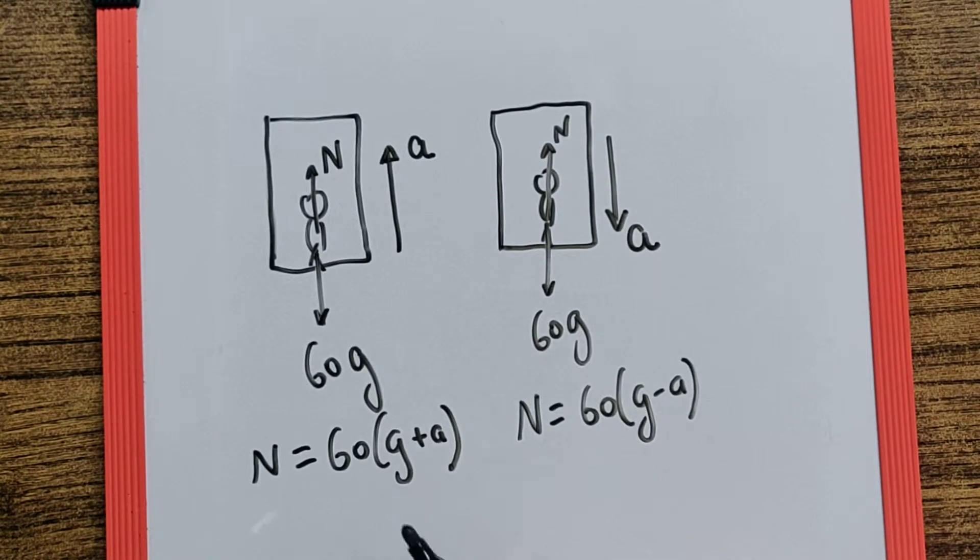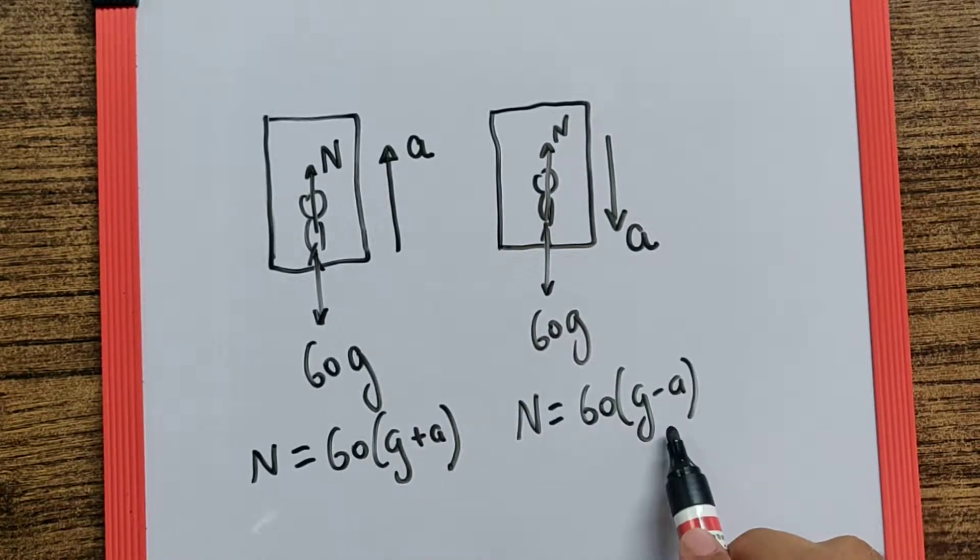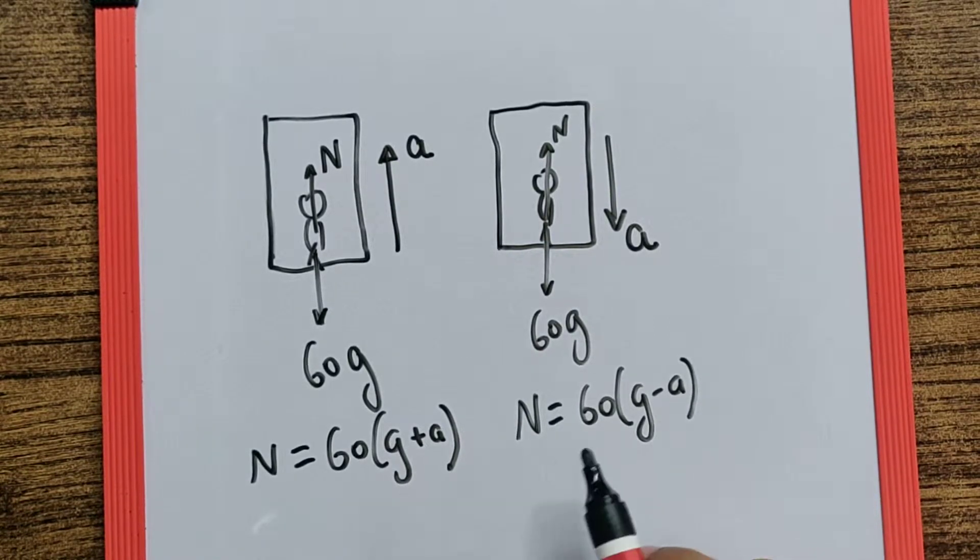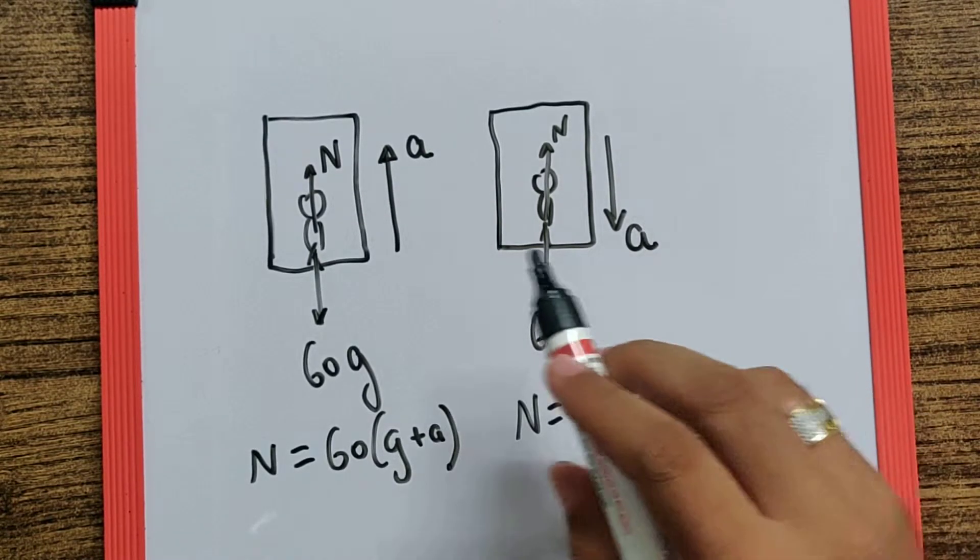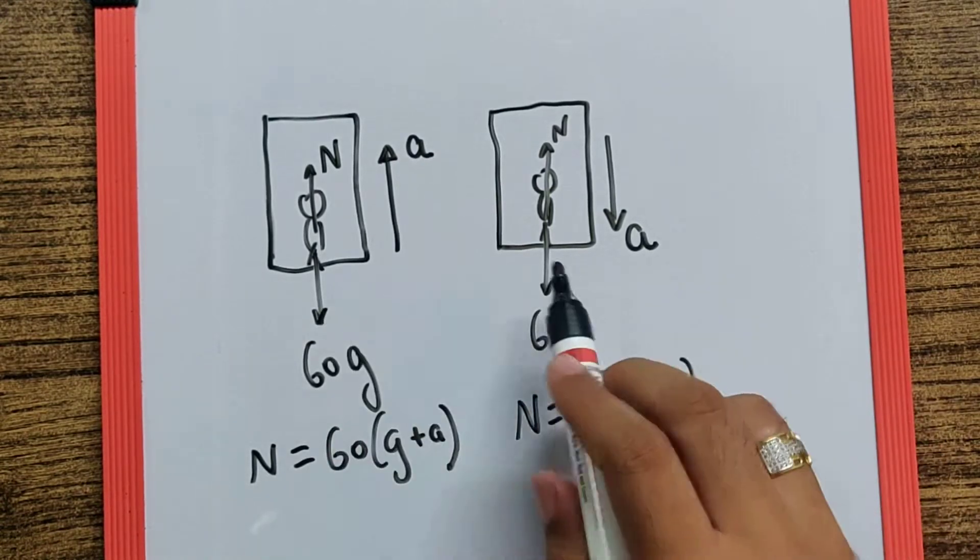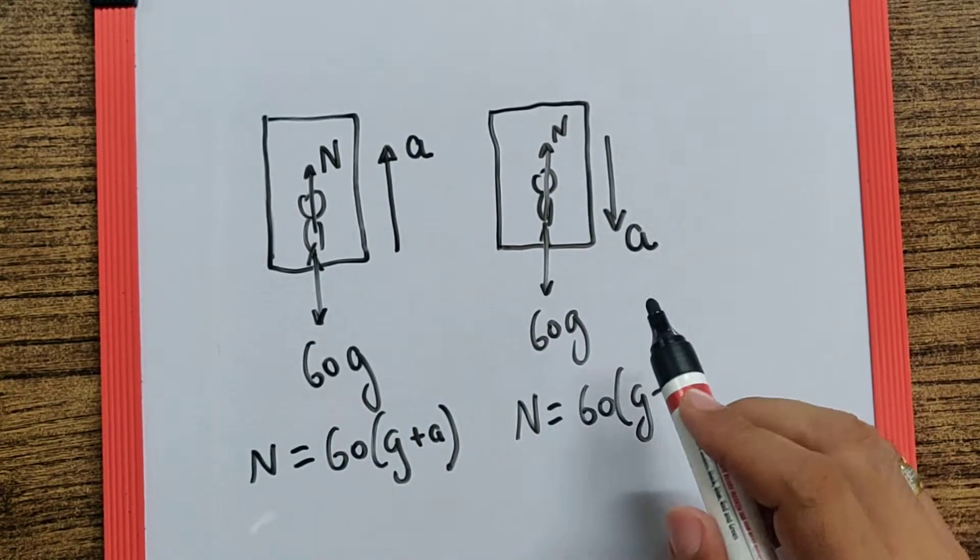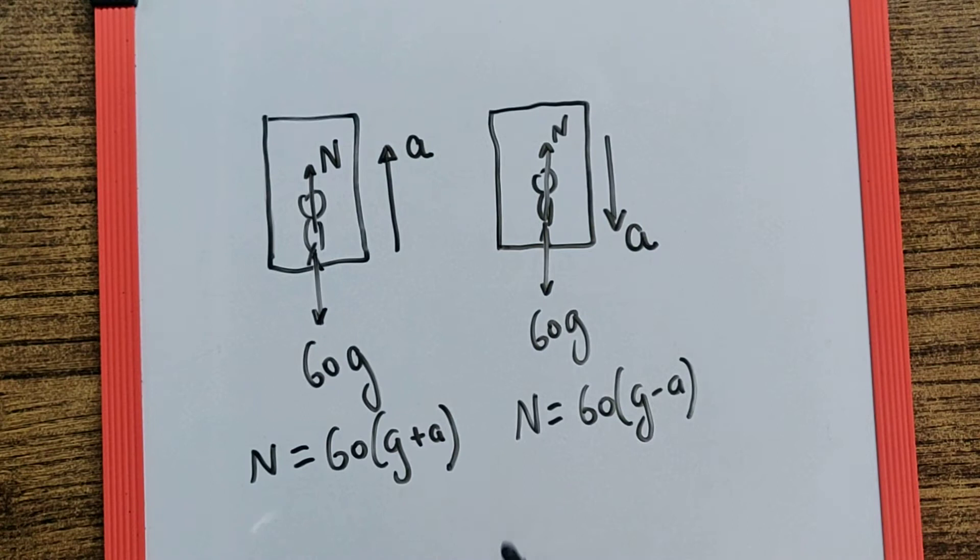Here the apparent weight will increase whereas here the apparent weight will decrease. But this will not happen for an instant but for the continuous time till this acceleration is being applied on the system.